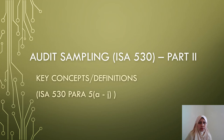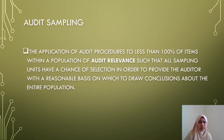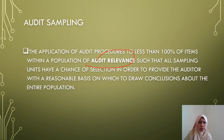Here, in this part 2, we will go through the key concepts. To begin with, audit sampling is defined as the application of audit procedures to less than 100% of items within a population of audit relevance, such that all sampling units have a chance of selection in order to provide the auditor with a reasonable basis on which to draw conclusions about the entire population.